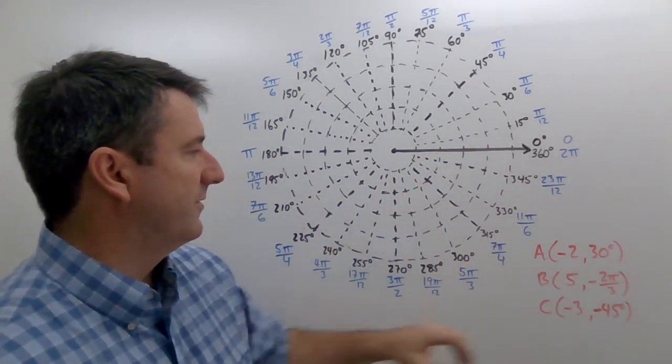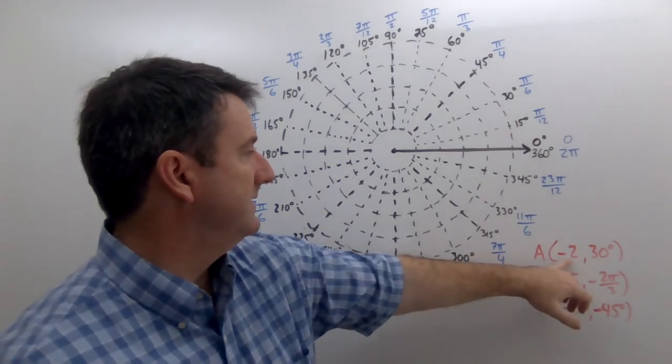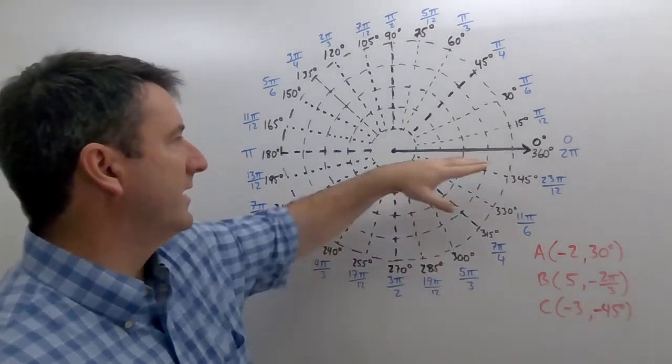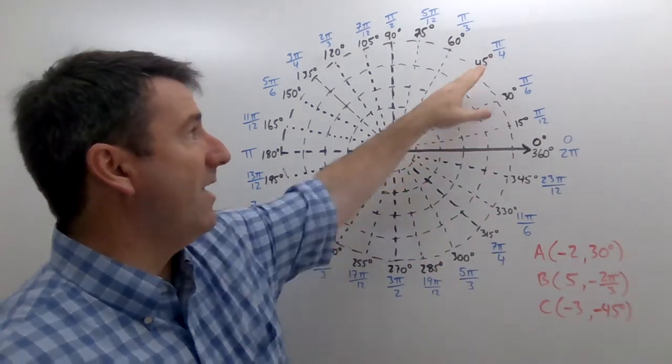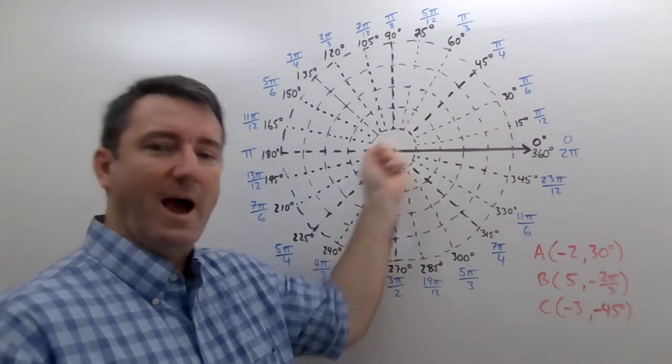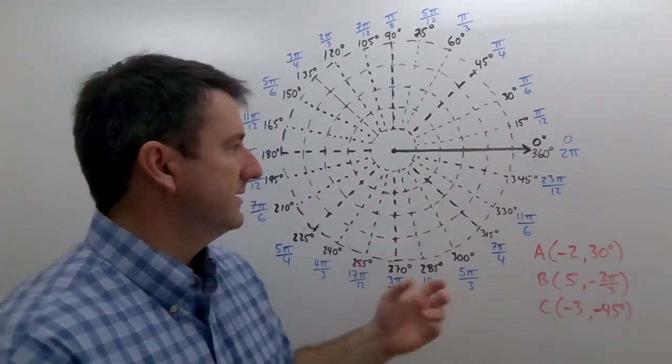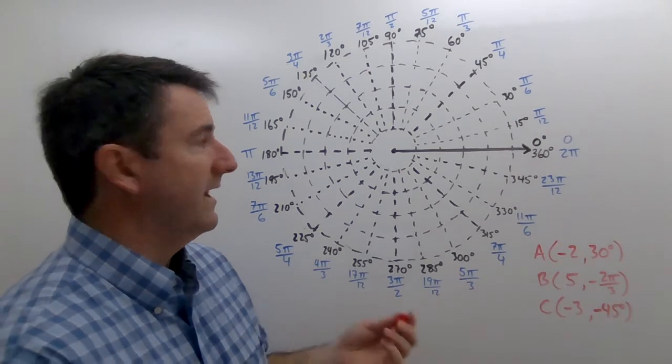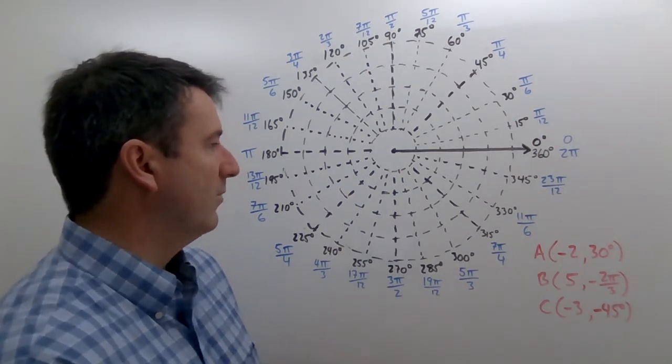Now, for the distance, for the r value, if that's negative, then we're going to go to our angle. And instead of going out toward that angle, we're going to go in the opposite direction. So let's graph these three points, and I'll show you what I mean by this.